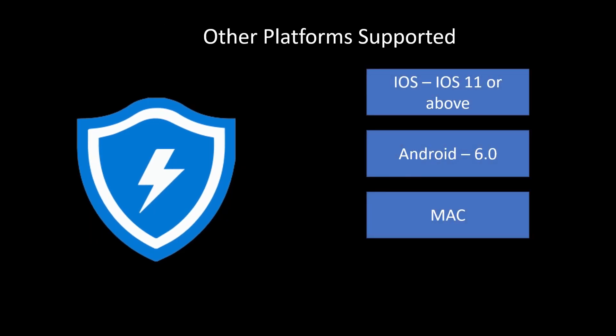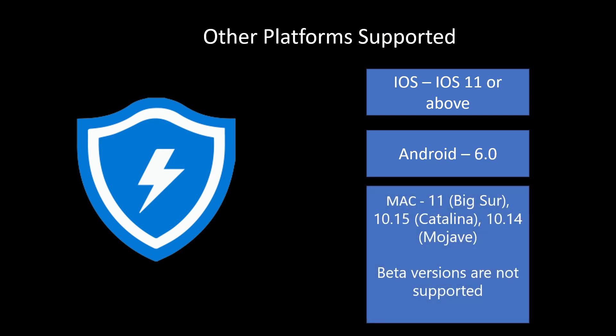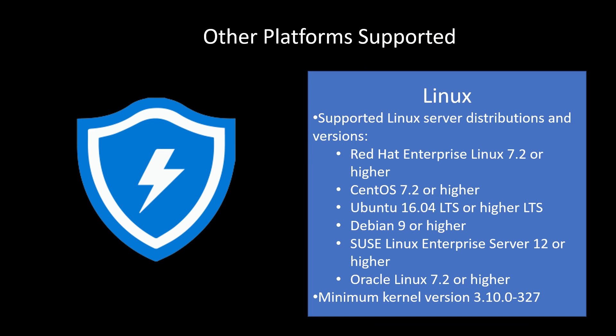When we talk about other platforms: anything above iOS 11 is supported; Android 6.0 or above is supported; for Mac, the supported editions are 11, 10.15, and 10.14 — any beta version is not supported. For Linux, the current supported list includes Red Hat, CentOS, Ubuntu, Debian, Linux Enterprise Servers, and Oracle Linux. Always check the official Microsoft documentation as this information changes over time.